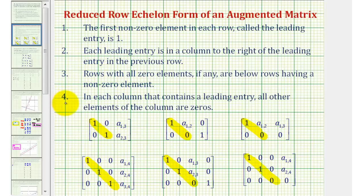If these first three conditions are met, we have row echelon form. The fourth condition is what makes reduced row echelon form. So number four: in each column that contains a leading entry of one, all other elements of the column are zero.